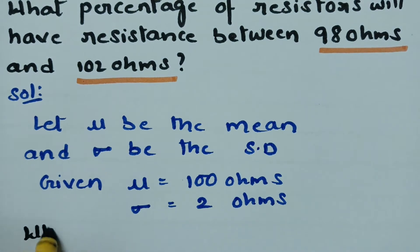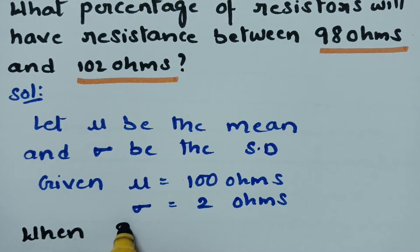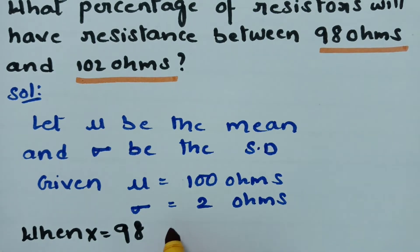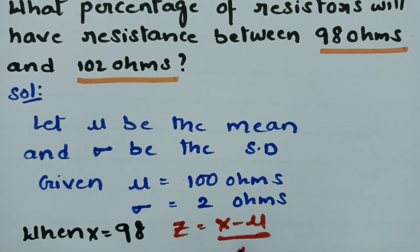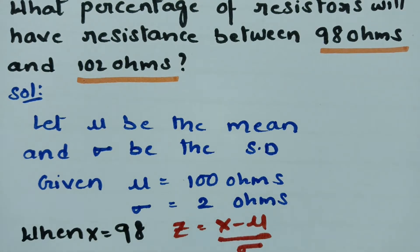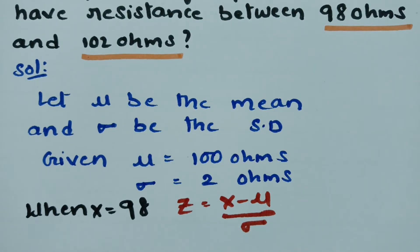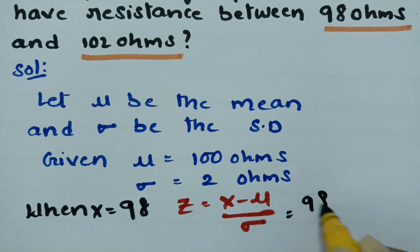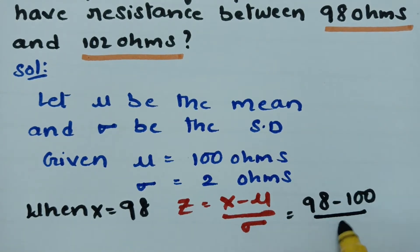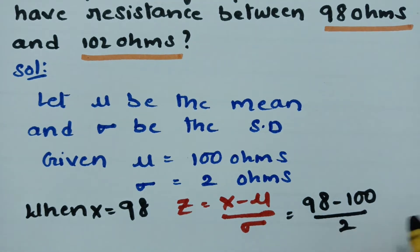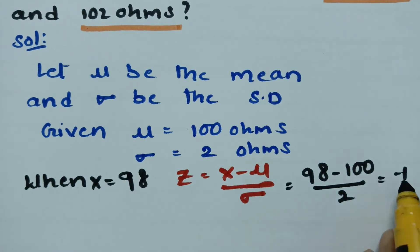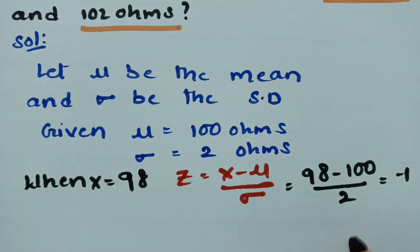When x is equal to 98, we calculate the z value using the formula z = (x − μ) / σ. Substituting: z = (98 − 100) / 2 = −2 / 2 = −1. So when x = 98, we get z = −1.